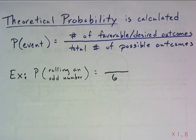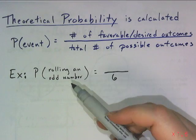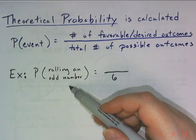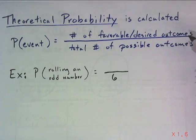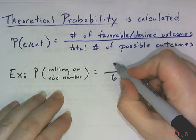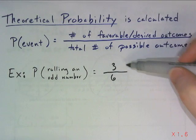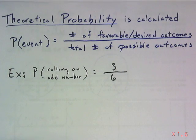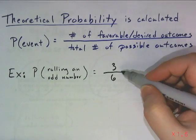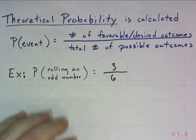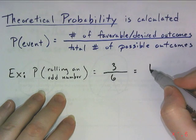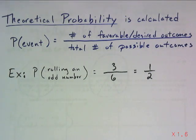How many of those are an odd number? Because what I desire to happen, what I want to happen, is rolling an odd number. There are three different possibilities of odd numbers that I can land on. So number of favorable or desired outcomes is three out of a total number of possible six outcomes. Now that I've got this set up, I need to reduce my fraction. So my chances of rolling an odd number are one half.